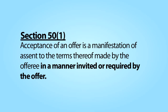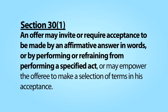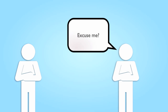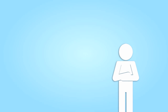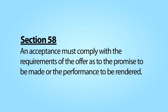The phrase 'in a manner invited or required by the offer' is of particular importance. We have learned that the offeror is the master of the offer. In addition to being able to propose the terms he desires, section 30 tells us that the offeror could also specify the manner of acceptance. Thus, if the offeror specifies that the acceptance must be in writing branded on the side of a pig, the offeree cannot accept by sending an email stating 'I accept your offer.' To accept, the offeree must comply with the offeror's specified manner of acceptance. Any other form of acceptance is simply not kosher. The idea that the offeror is master of the offer is reiterated in section 58 of the restatement, which states that acceptance must comply with the requirements of the offer.